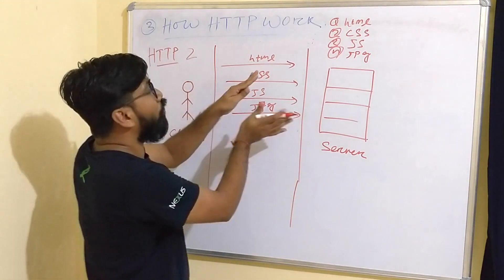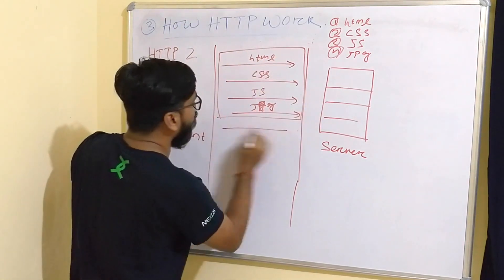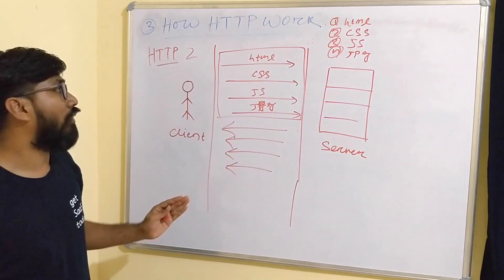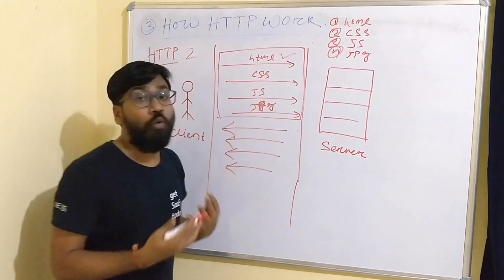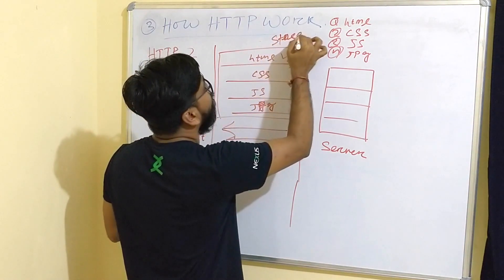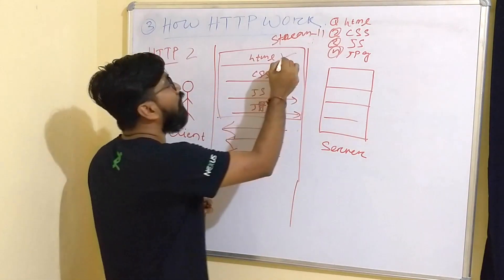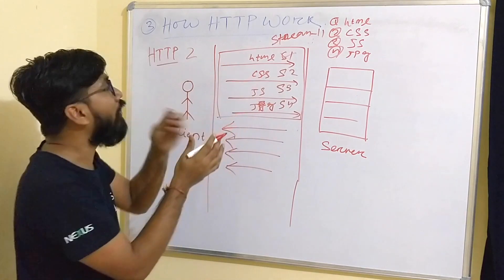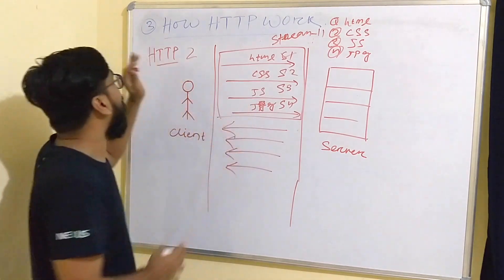Once you make the request, it is channelized — one channel is used to request and get the response. The question is: how does the server identify which request is for what? This is where streams are introduced. Each request has a unique stream ID — for example S1, S2, S3, and S4. This is how HTTP 2 works.